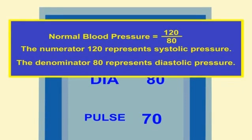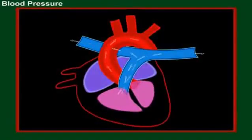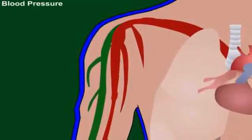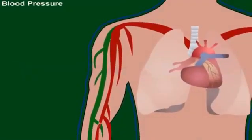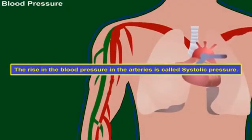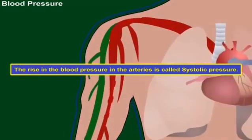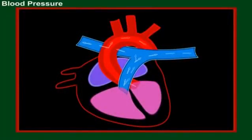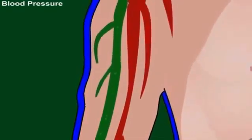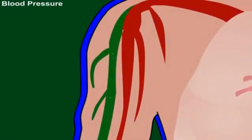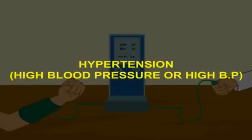When the ventricle contracts, blood is pumped into the aorta. Hence the BP increases. During diastolic pressure, more blood is pumped to the heart and maintains blood pressure at the lower level.